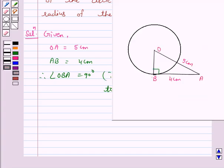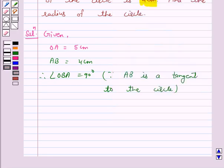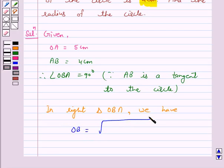So in right angle triangle OBA, we have OB is equal to the square root of OA squared minus AB squared.